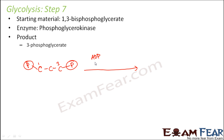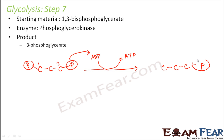The enzyme transfers one phosphate group from 1,3-bisphosphoglycerate to ADP — adenosine diphosphate — which is found in the cytosol. ADP gains one more phosphate, converting from diphosphate to triphosphate, becoming ATP. The remaining molecule retains the phosphate at the third position, which is why it is named 3-phosphoglycerate.